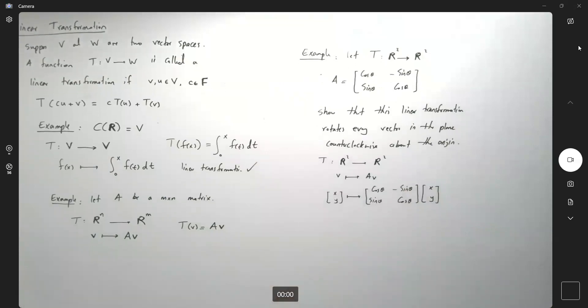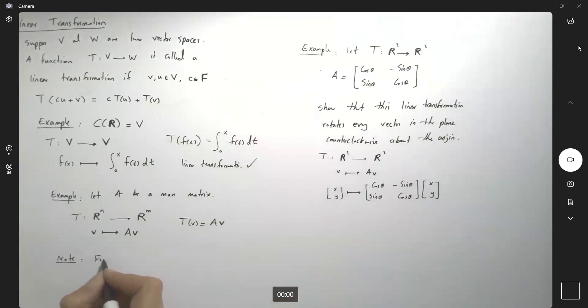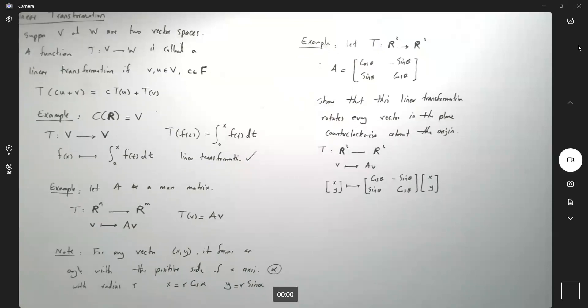I'll write down the note here for you. For any vector like X and Y, it has or it forms an angle with the positive part of X axis. Let us call it alpha. So, with radius R, X can be written as R cosine alpha, and Y is R sine alpha. It makes it easier for us to analyze it in terms of sine and cosine.